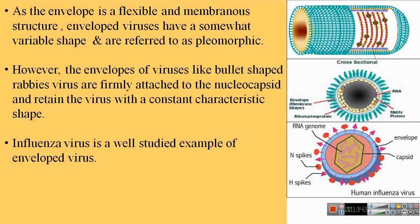The envelope of viruses is always flexible, so enveloped viruses have a somewhat variable shape and are said to be pleomorphic. However, in certain viruses like the rabies virus, which is bullet-shaped, the envelope is firmly attached to the nucleocapsid and gives the virus a constant shape. You can see here a picture of the rabies virus, which is bullet-shaped, along with a cross-sectional view showing the envelope firmly attached to the nucleocapsid.